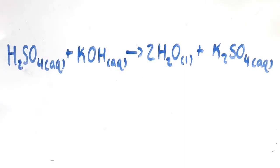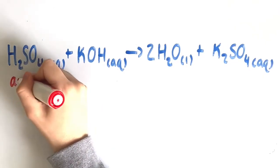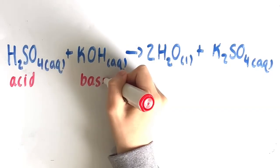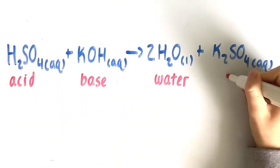An example of this reaction would be sulfuric acid plus potassium hydroxide yields water and potassium sulfate. The acid in this reaction is sulfuric acid and the base is potassium hydroxide. They yield water and potassium sulfate, which is the salt.